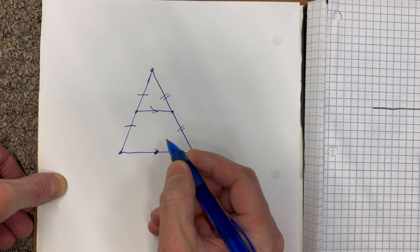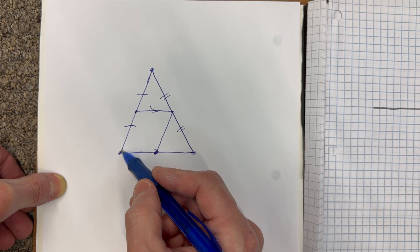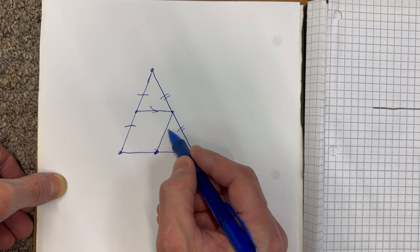Now if I find the midpoint of this side, and I connect these two, this becomes a mid-segment, and it's parallel to this side, and it's going to be half as long.